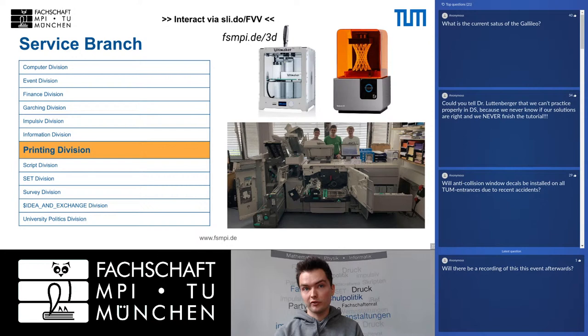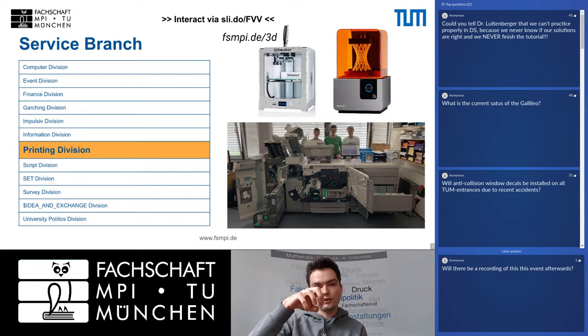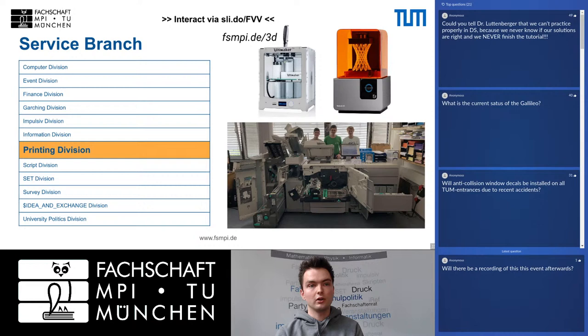We have 3D printers including Ultimakers that use plastic, and a FormLabs printer that uses a fluid which hardens under UV light, growing objects slowly out of the printer. If you want to 3D print something, you can use the service at fsmpi.de, order objects, and collect them at the Script Sales Office.